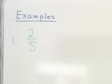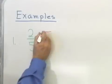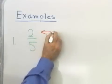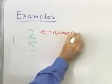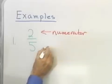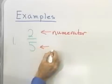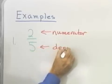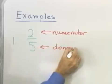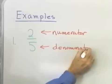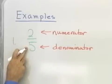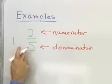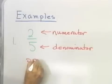For example, here I've written the fraction 2/5. 2 is the numerator and 5 is the denominator. Since the numerator 2 is less than the denominator 5, this is an example of a proper fraction.